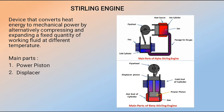The Stirling engine converts heat energy to mechanical power by alternatively compressing and expanding a fixed quantity of working fluid. Its main parts are two pistons: the power piston — a small, tightly sealed piston that moves up when gas expands — and the displacer — a large, loose piston that allows air to move between the heated and cooled sections. One side of the piston is continuously heated and the other continuously cooled. Air moves to the hot side, expands pushing the piston up, then moves to the cool side, contracts pulling the piston down. Examples shown include the alpha and beta Stirling engine configurations.